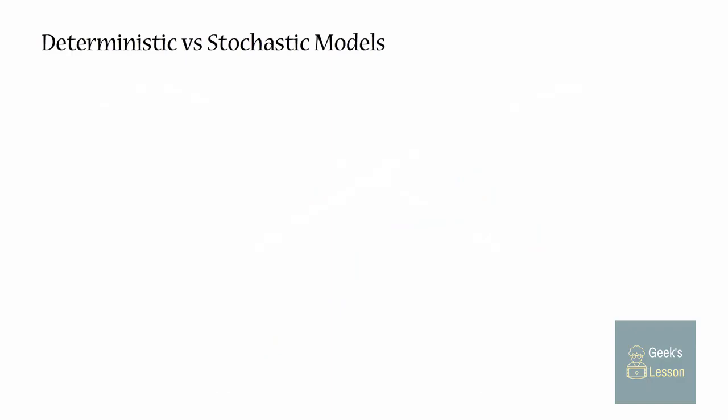First let's quickly get straight the difference between deterministic models and stochastic models. In a deterministic model, everything in the model is determined from the beginning. Every time you run the model, it'll come up with the same results. Let's say I have my deterministic population growth model.